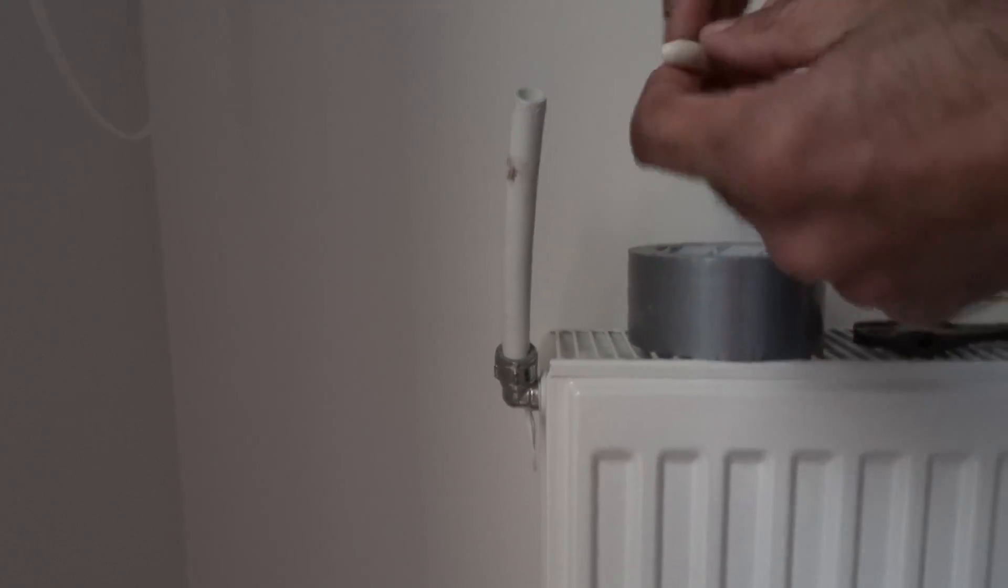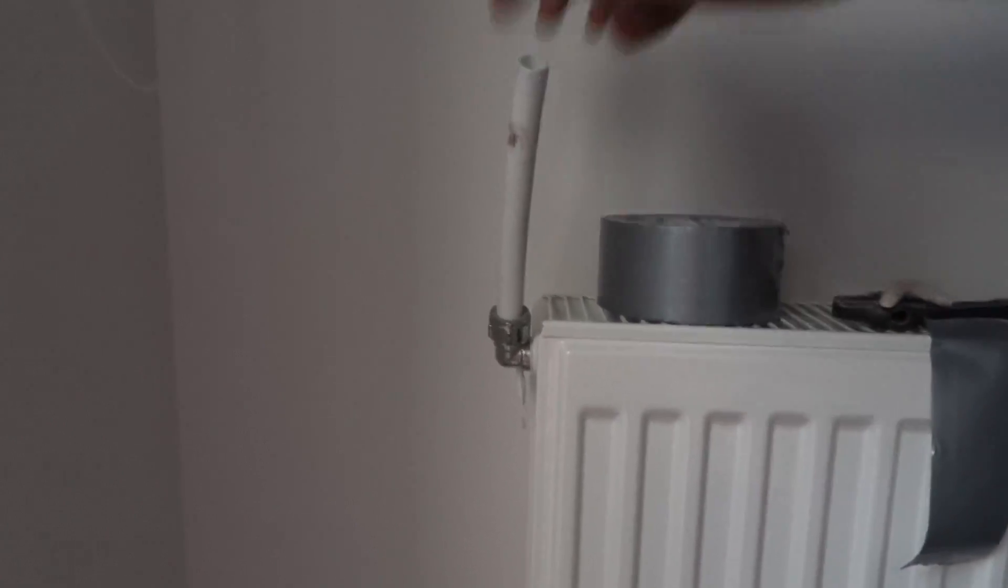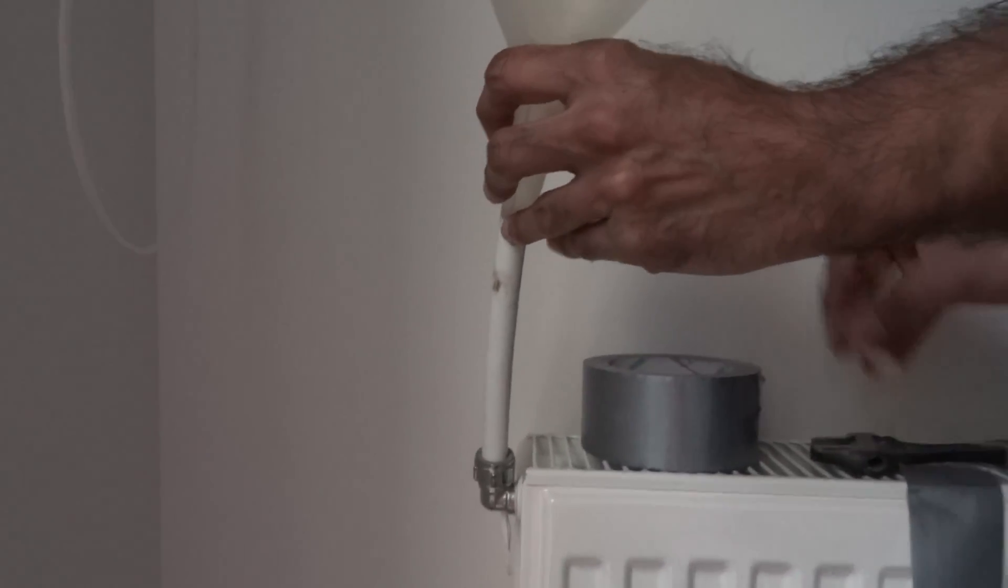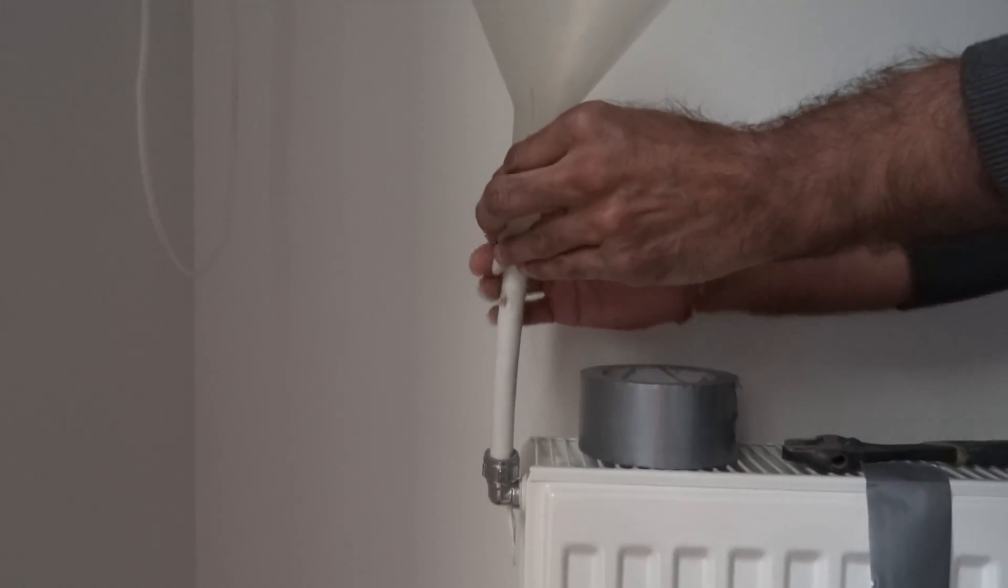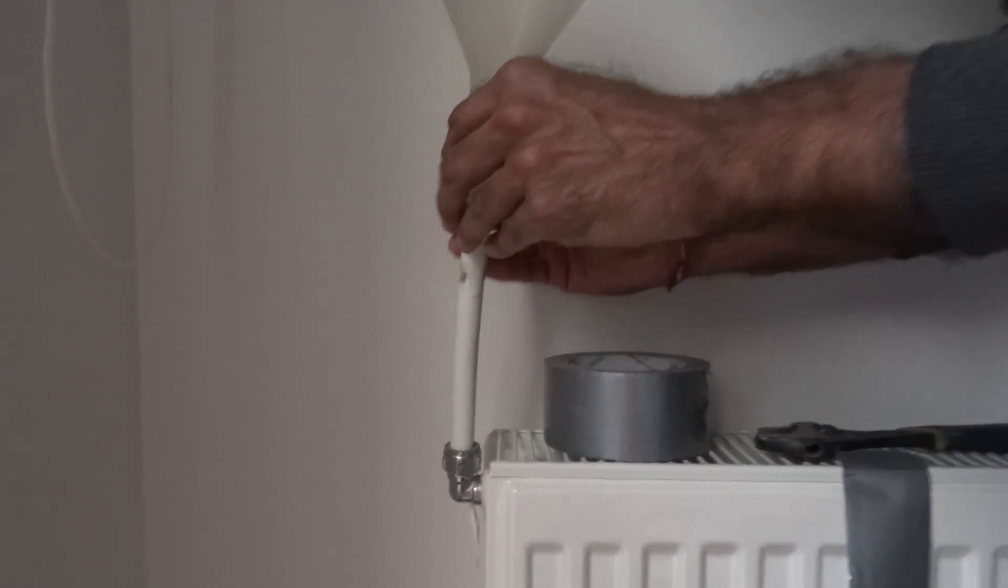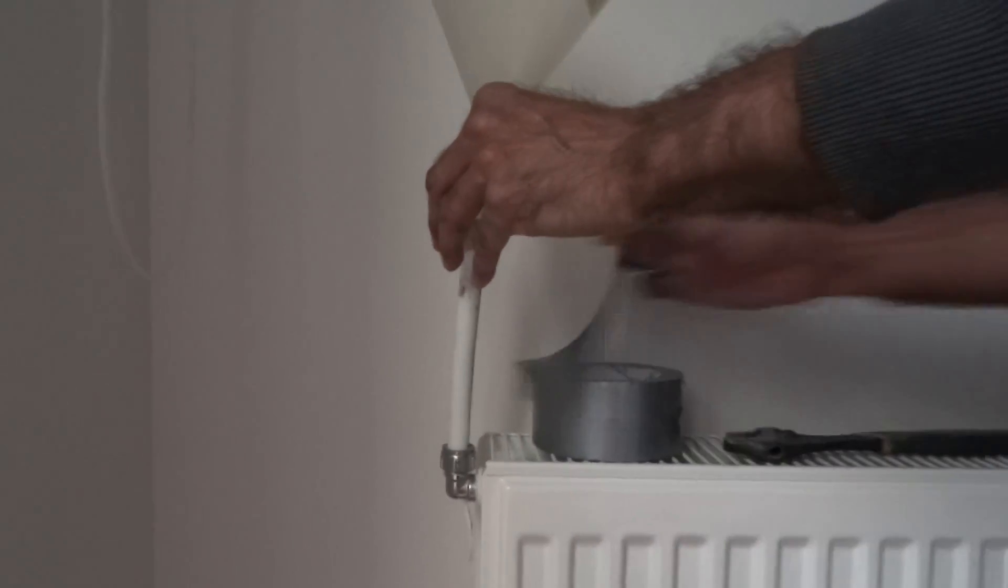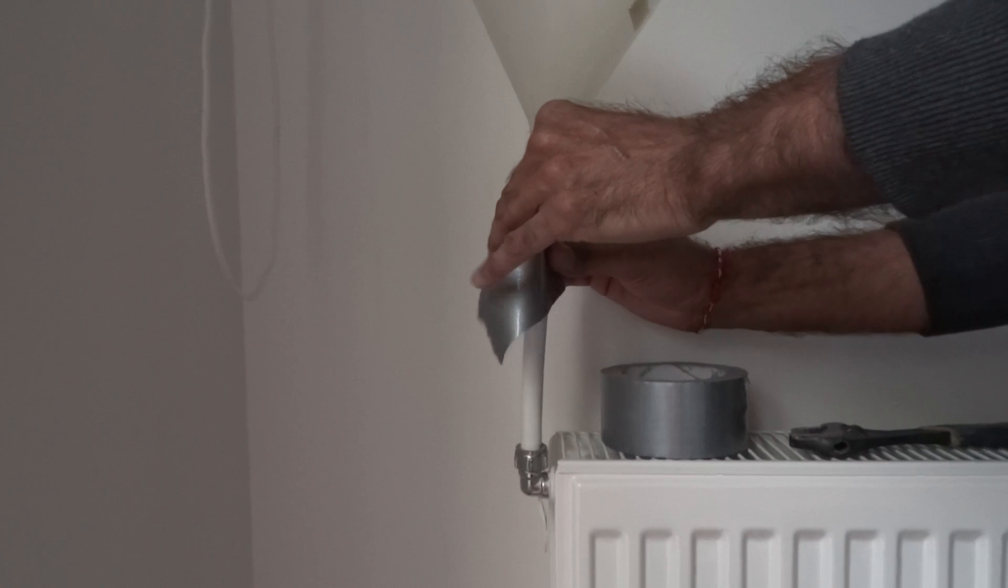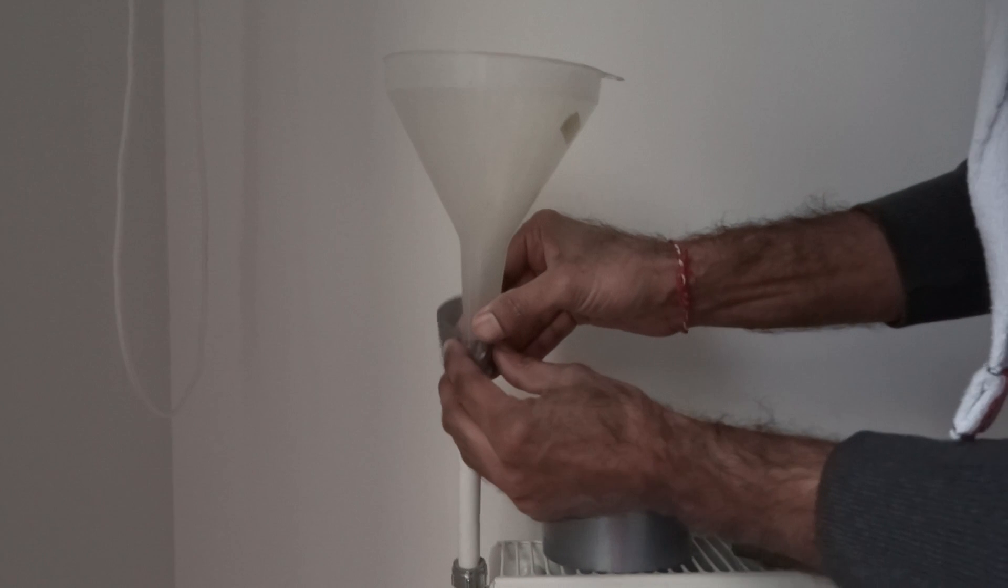So I've got the plumber's mate ready and we get a bit of duct tape as well. Plumber's mate just to seal it a little bit. Won't be a perfect seal. And then just duct tape around it. Obviously temporary so it doesn't really matter.